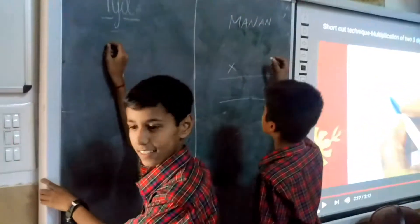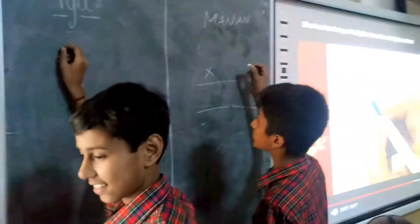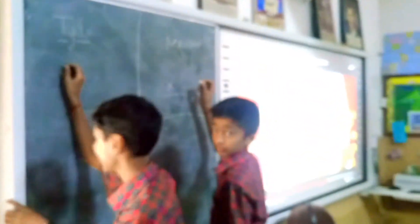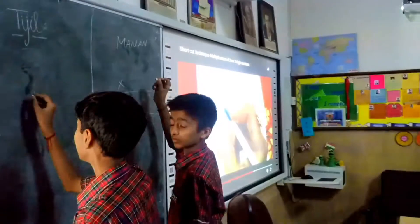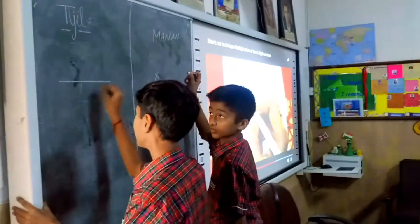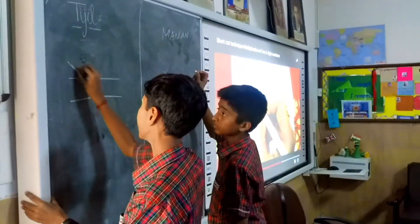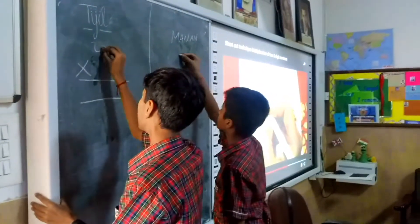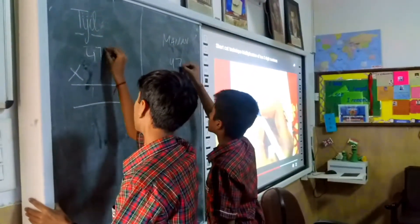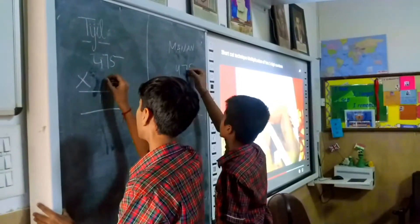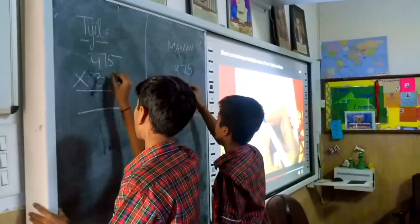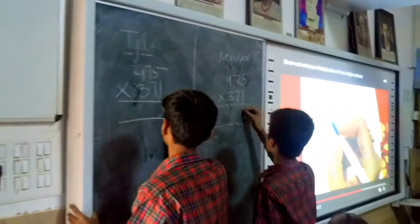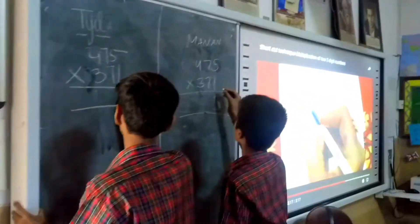With us Tijil and Manan, and they are competing with the whole class. The next question to you is: 475 multiply 371. Let us see who will do it first.